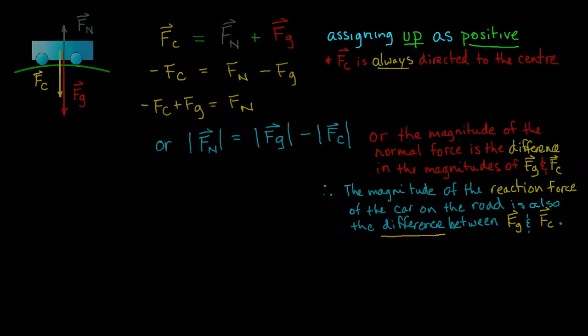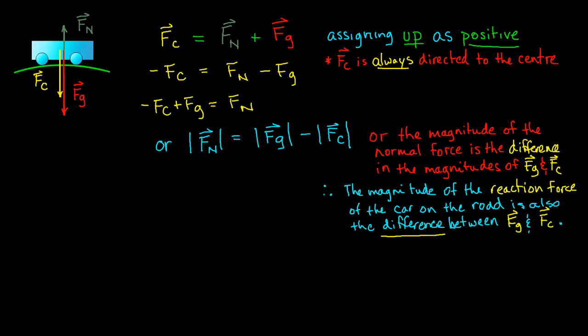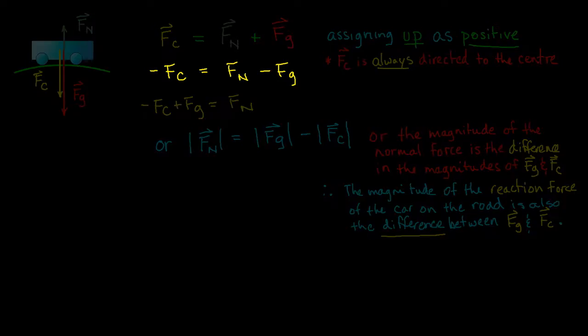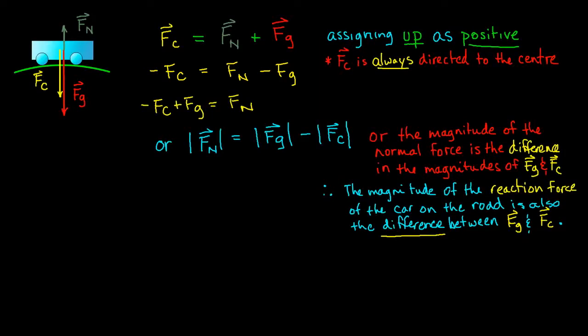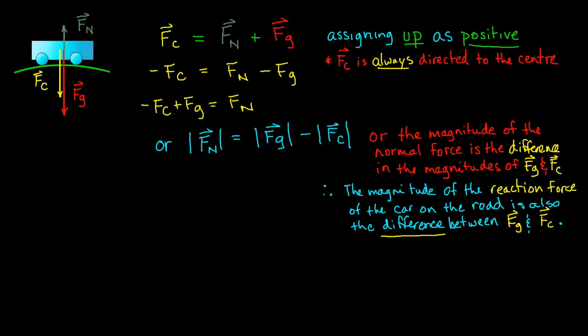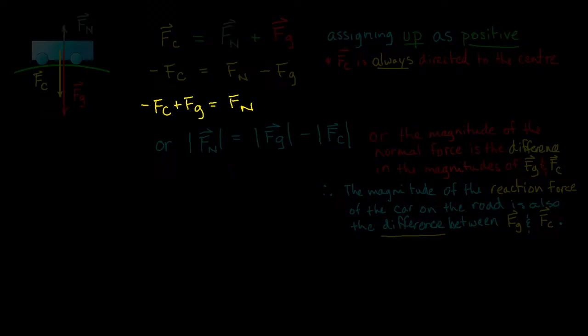When I write my vector equation I say that the centripetal force is equal to the sum of the normal force and the gravitational force. Now as a convention, a very common thing to do in physics, we're going to assign the direction up as positive. That will allow me to drop the vector symbols on top of all the forces and assign negatives and positives according to the direction they're pointing. So I would write negative Fc equals Fn minus Fg. Now remember I'm after that Fn so I rearrange that equation and I have negative Fc plus Fg equals Fn.